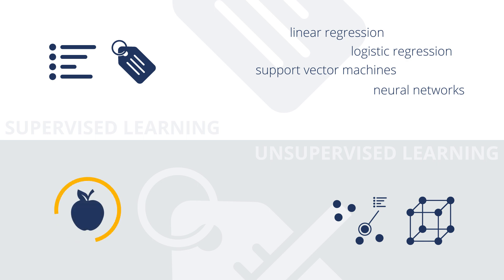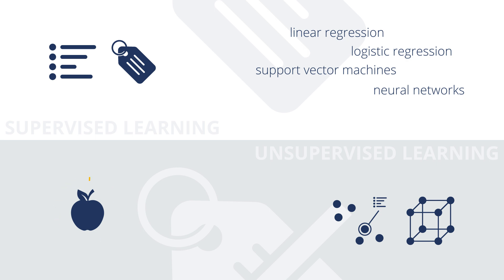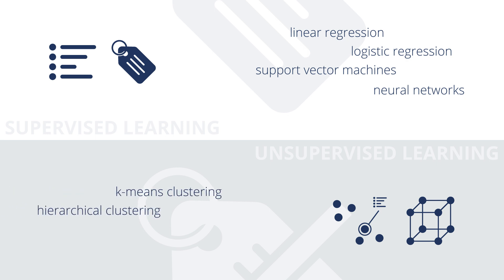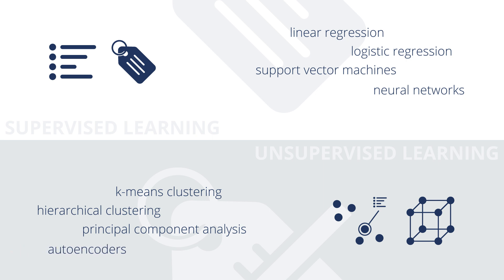Unsupervised learning, on the other hand, is like taking the same fruit picture book, analyzing all of the fruits to detect patterns, and then deciding to group fruits by color and size. Classical examples of unsupervised learning algorithms are k-means clustering, hierarchical clustering, principal component analysis, autoencoders, and so on.